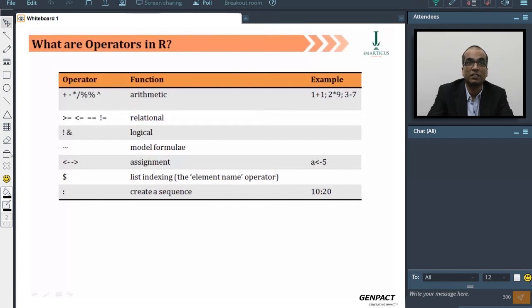For using an operator which signifies a model formula, we'll be using the tilde sign, which is on the extreme left of your keyboard. The assignment operator, less than dash, can also be written as dash greater than, which means you are assigning something on the left to the right, but preferably you should use the previous notation.